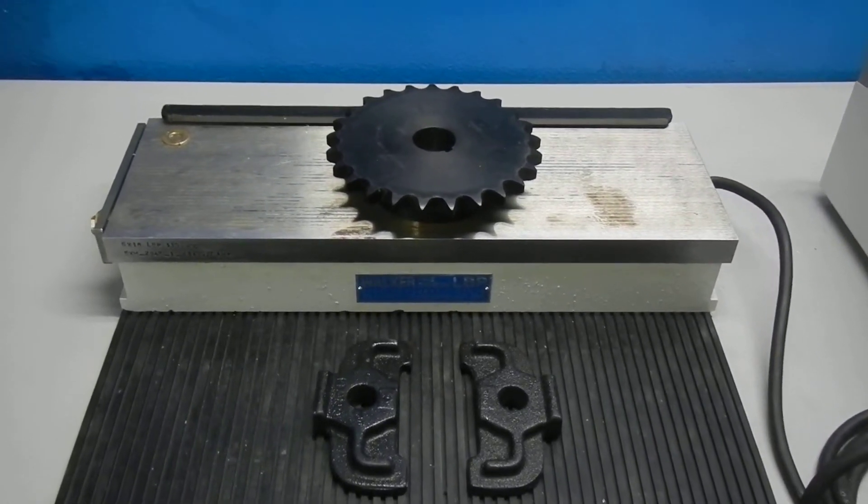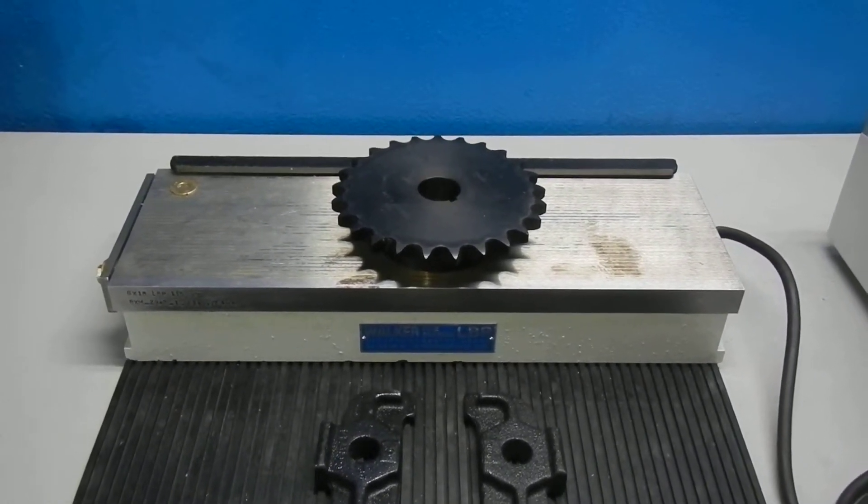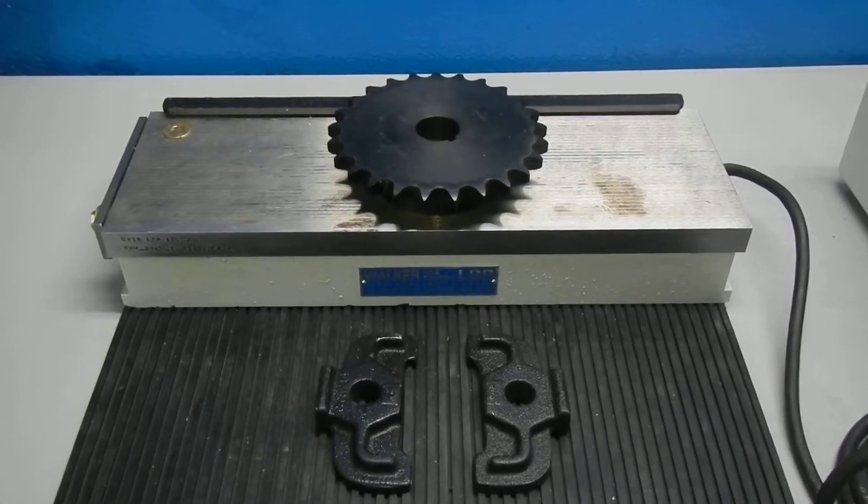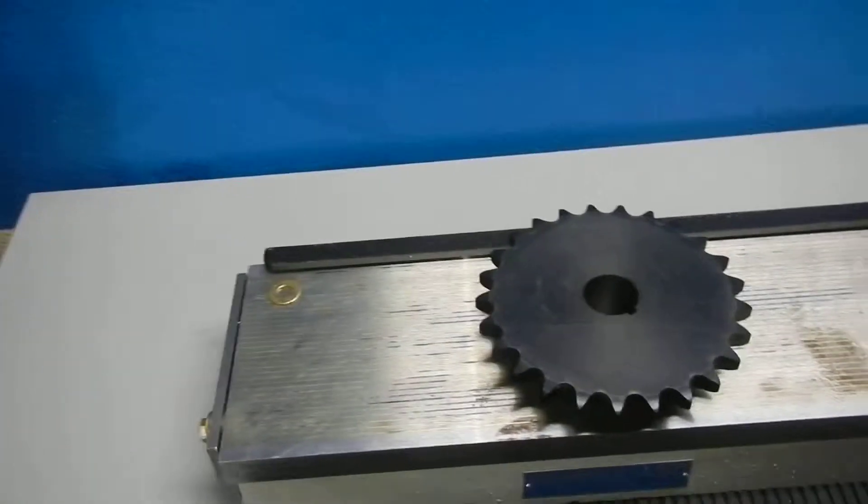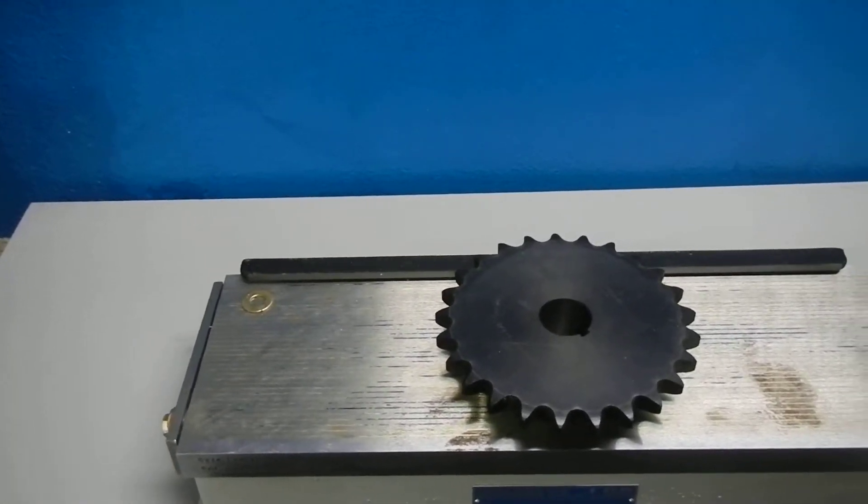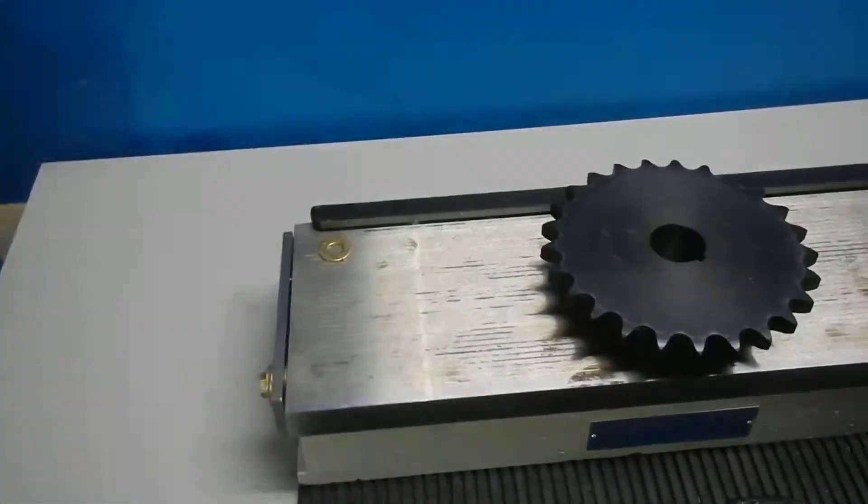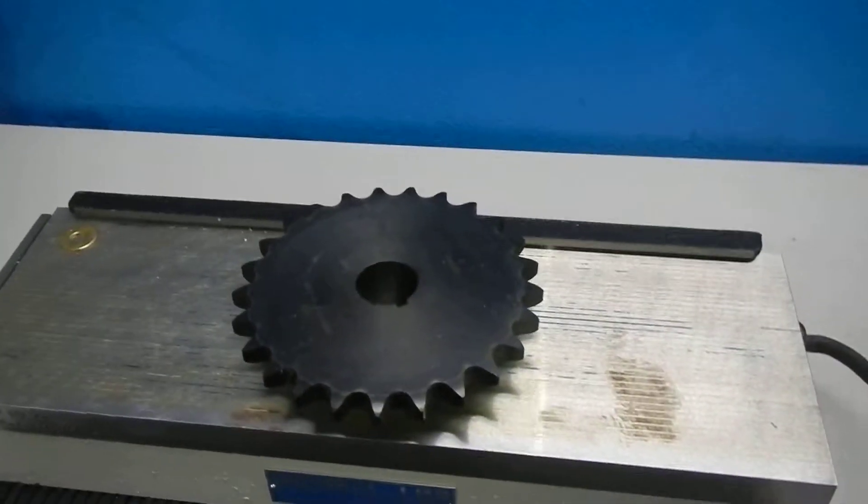Here we have an OS Walker 6-inch by 18-inch LBP Fine Division Electromagnetic Chuck, and it appears to be unused.